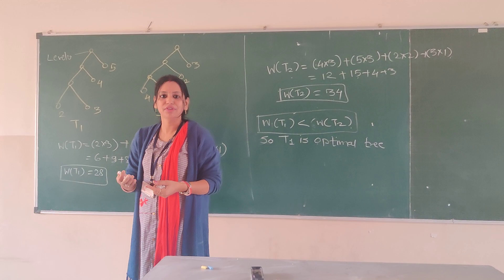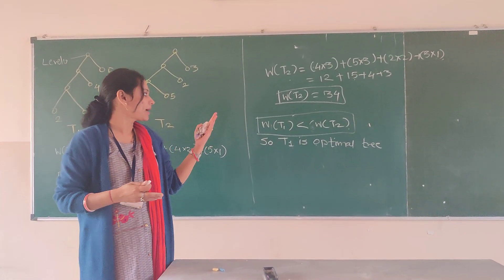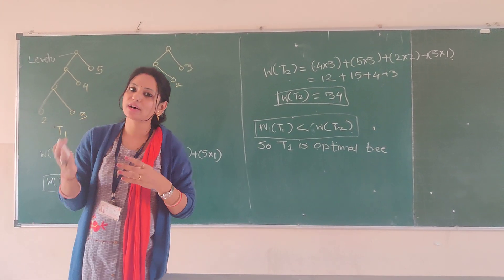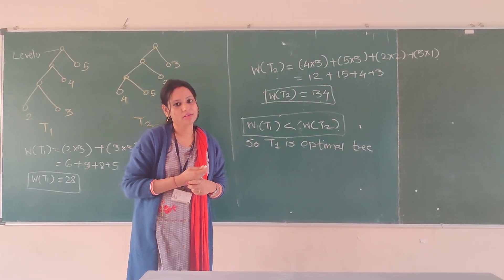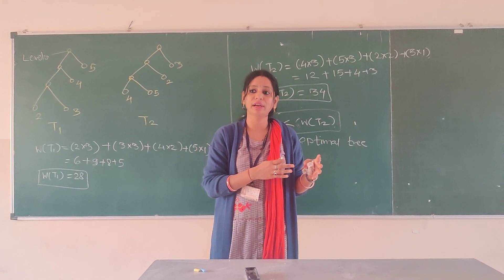Because optimal tree is the tree which is binary tree and it is the smallest weight. So by comparing those two trees as the weight of first tree is minimum, that is called as the optimal tree. So this is all about optimal tree and how we can solve it.